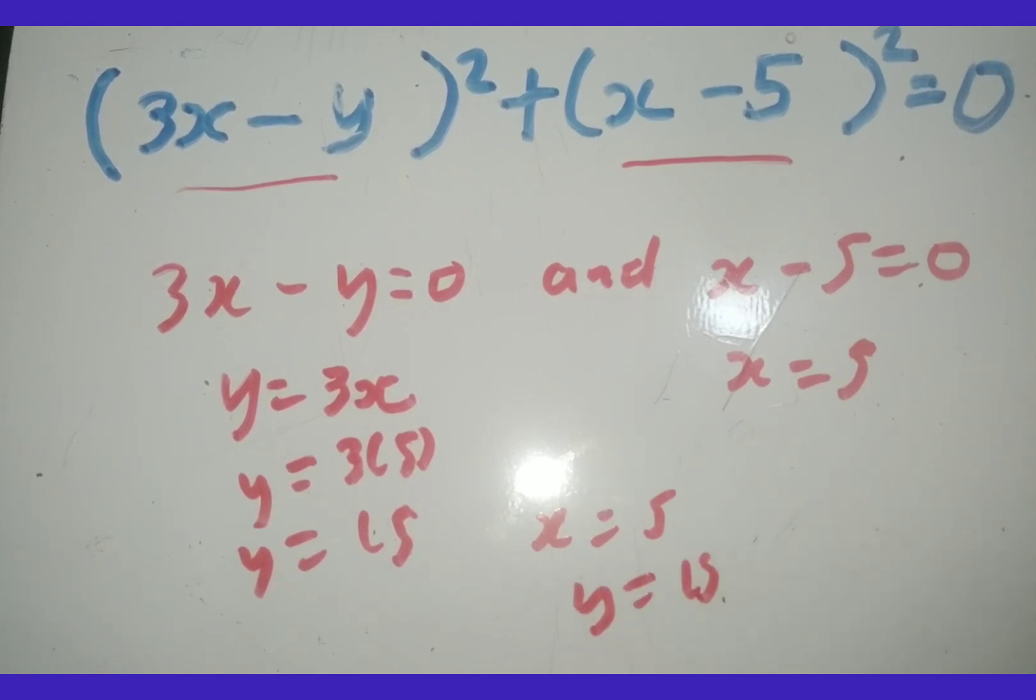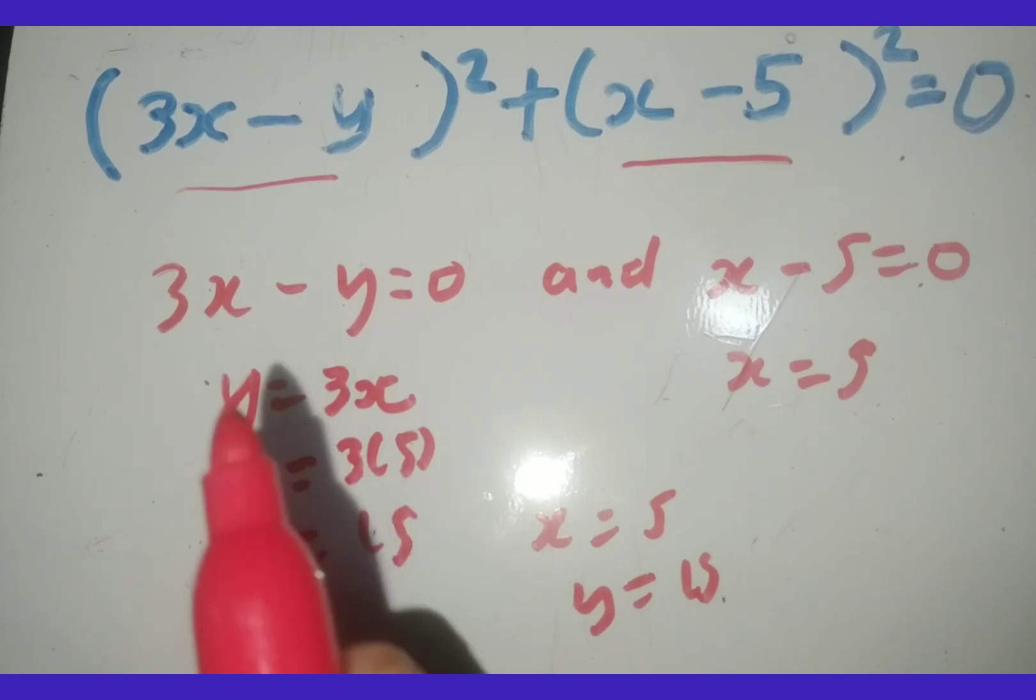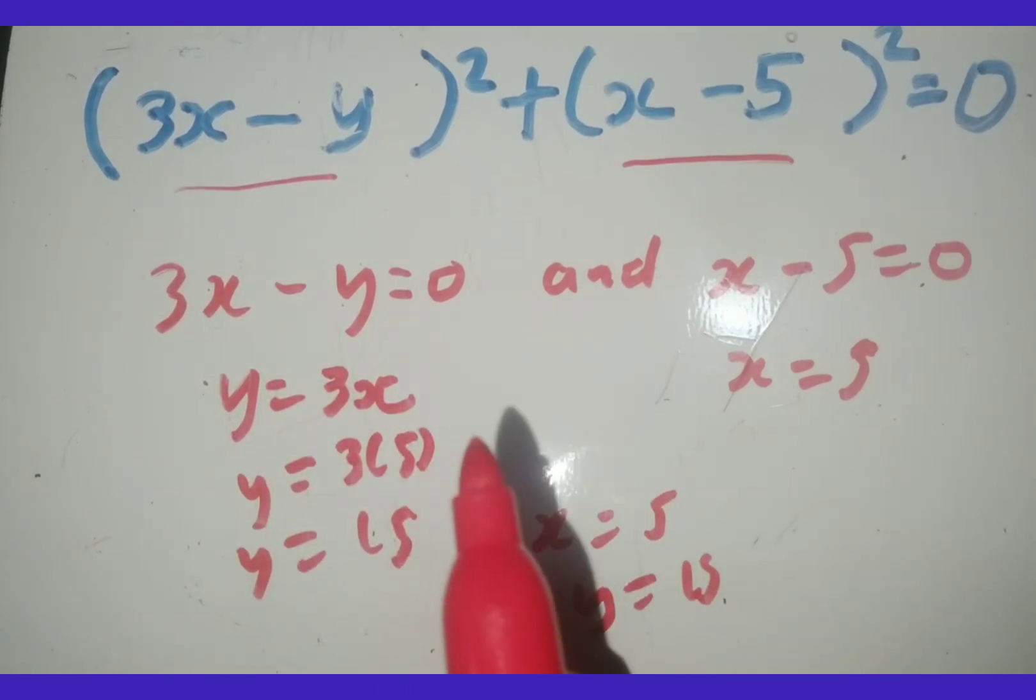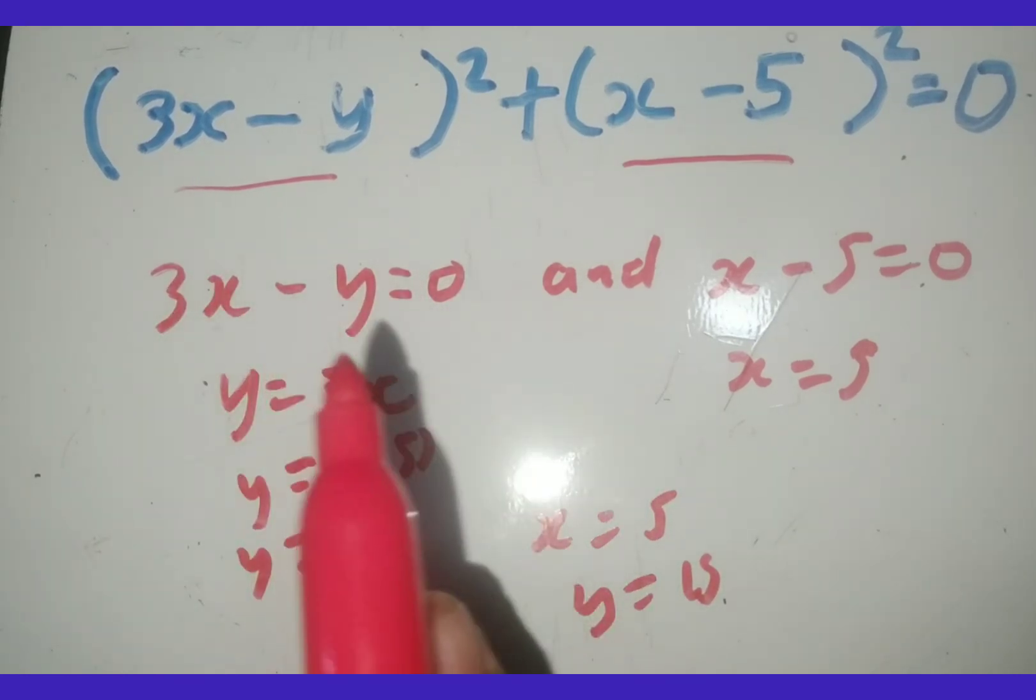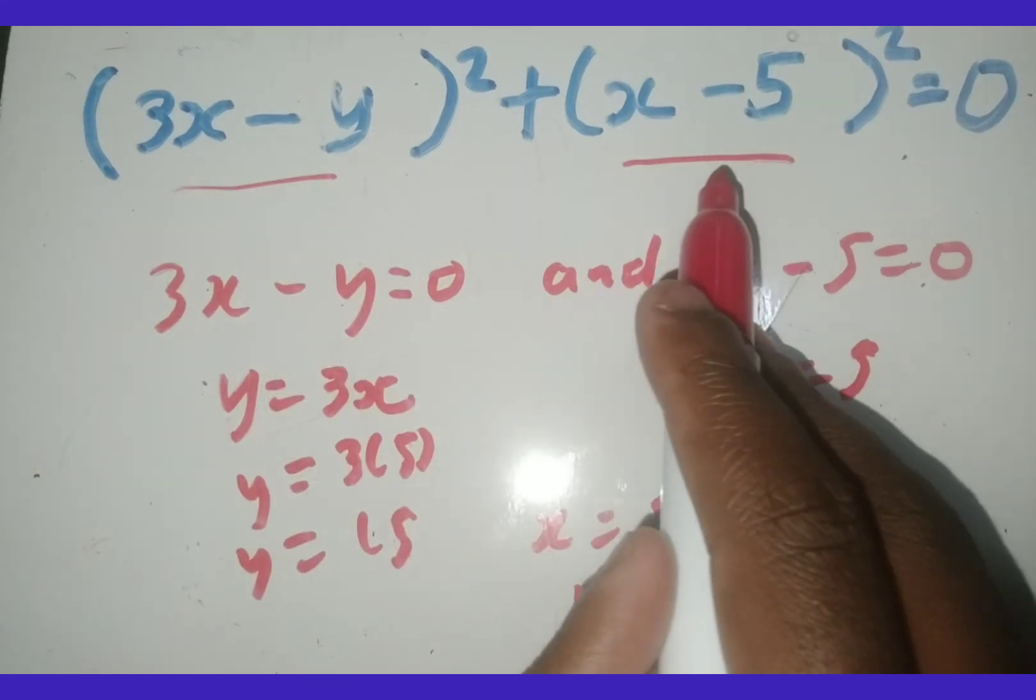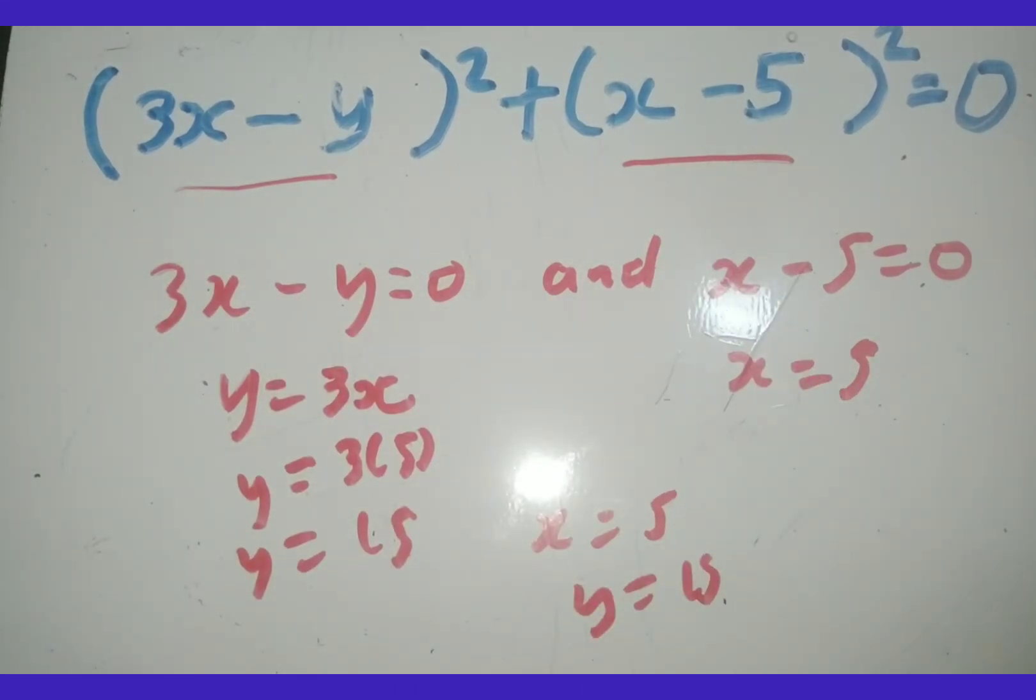So it's that simple. Whenever you've got two squares adding, the only way for us to get 0 is for both of them to be 0. So you make this 0 and you make that 0 as well. If you enjoyed this video, please like and subscribe to my channel. If you've got any questions, comment on the section below and I'll respond.